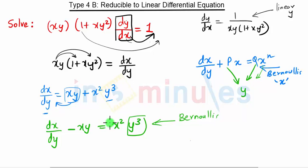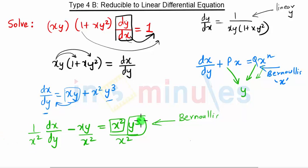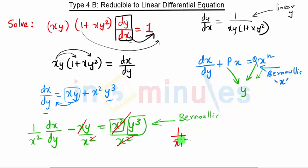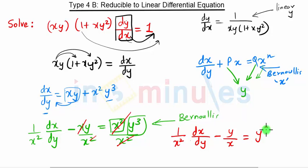This is the Bernoulli's equation in x. For this, we first divide by x^n — here x^n is x². Dividing the whole equation by x², the x terms cancel, and our new equation becomes (1/x²)·(dx/dy) − y/x = y³.